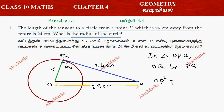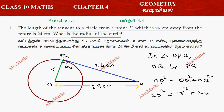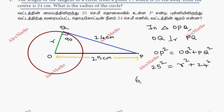OP squared, the hypotenuse squared, is equal to OQ squared plus PQ squared. So OP is 25. We have r squared plus 24 squared. We apply Pythagoras: 25 squared is 625, 24 squared is 576. This is subtraction, equal to r squared.